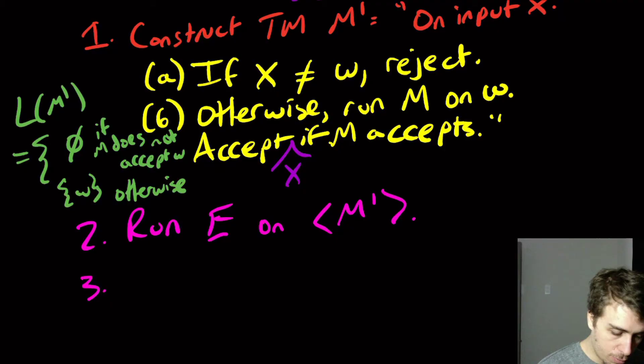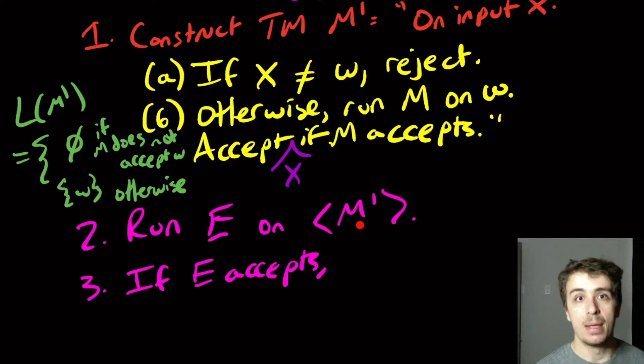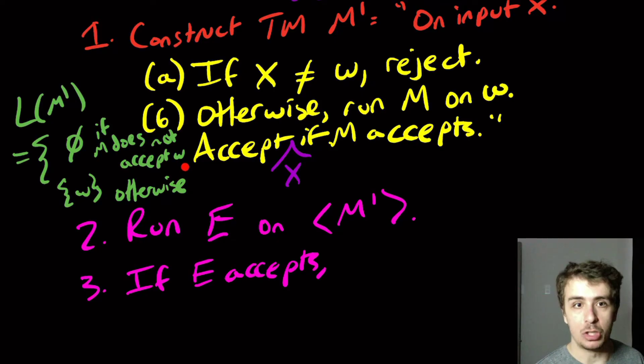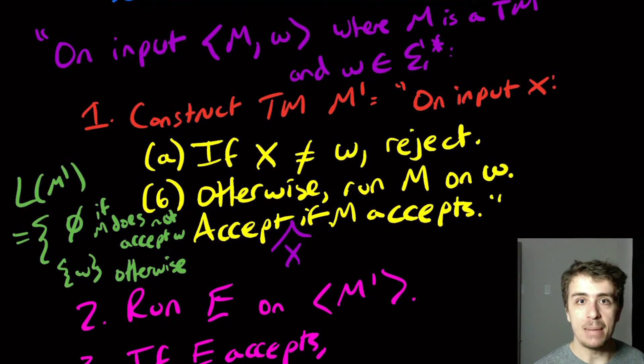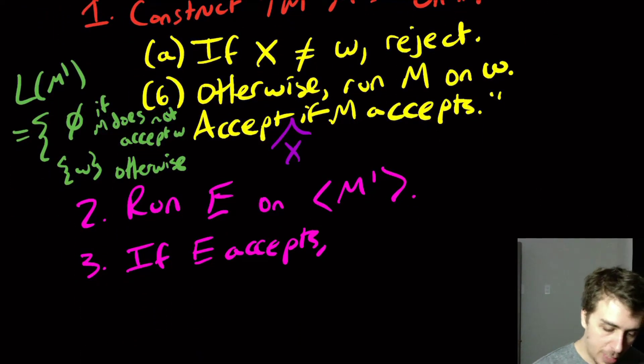So, well, since this is a decider, it must accept or reject. So if E accepts, then that says that M prime has empty language by definition. And if it has empty language by construction, that means that the original machine M did not accept the original input W. So if we're trying to solve the ATM problem, this is a reject situation. So here we need to reject.